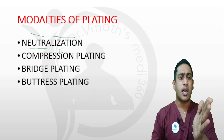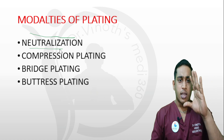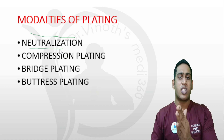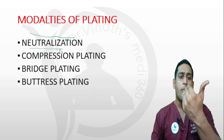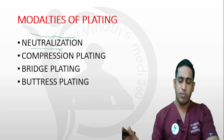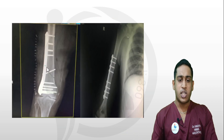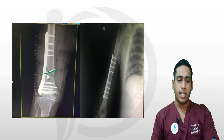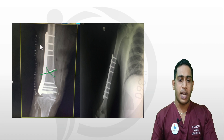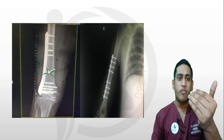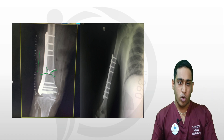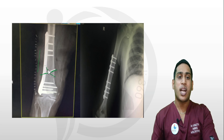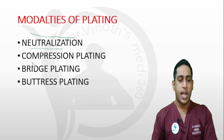Neutralization plates are also called protection plates. The main function of holding the fracture is done by a lag screw — a screw applied mainly to provide compression at the fracture site. For example, in a fracture of the distal femoral shaft, the fracture segments are held together with a lag screw. An additional plate is then applied to protect the bone and the screw from bending forces. This is called a neutralization or protection plate.